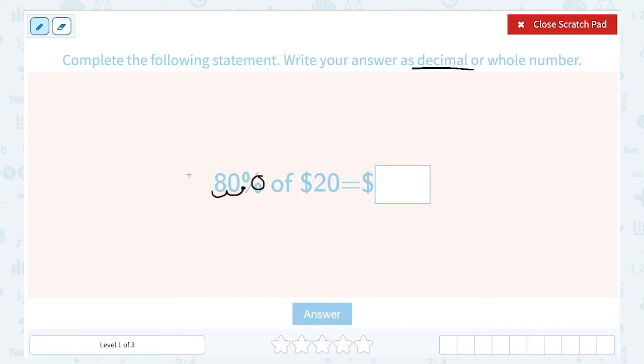So that gives me 0.80. So 0.80 of $20. Now of is a key word. When you're talking about a percentage of a number or a fraction of a number, that's a hint that of means to multiply. So we're going to take that 0.80 and multiply it by our $20.